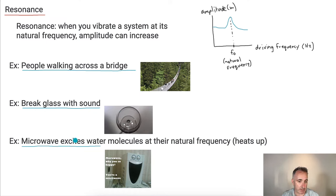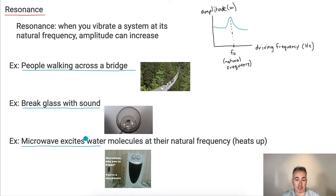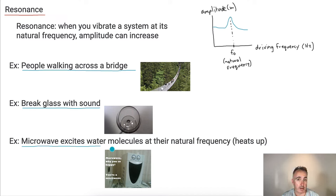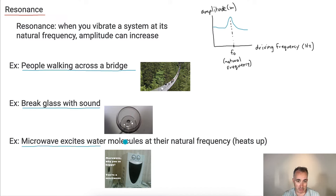Sometimes resonance is a good thing, like microwave light — that's light at a very specific wavelength that has a tendency to excite water molecules because it hits them at their natural frequency. When the water molecules move around, they heat up, which heats up the food in the microwave, as long as the food has some water in it. If you put just a plate with nothing on it in a microwave, most plates remain cold — because there wasn't much water to excite and vibrate at its natural frequency. But if there's food with H₂O in it, it heats up very well.